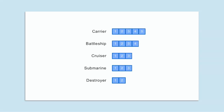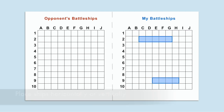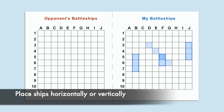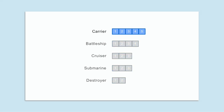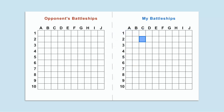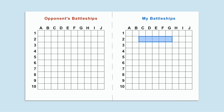Each player will place their 5 ships somewhere on the grid they titled My Battleships, by placing them either horizontally or vertically. A player is not allowed to place a ship diagonally. Each box on their grid will represent 1 space of a ship. So if a player was placing their length 5 carrier ship, they would decide on a start space, and count 5 spaces up, down, to the left, or to the right of that space. After deciding on the 5 spaces, they will create a dark outline on the grid to represent the ship. They can also lightly shade in the boxes to make ship placement clearer.